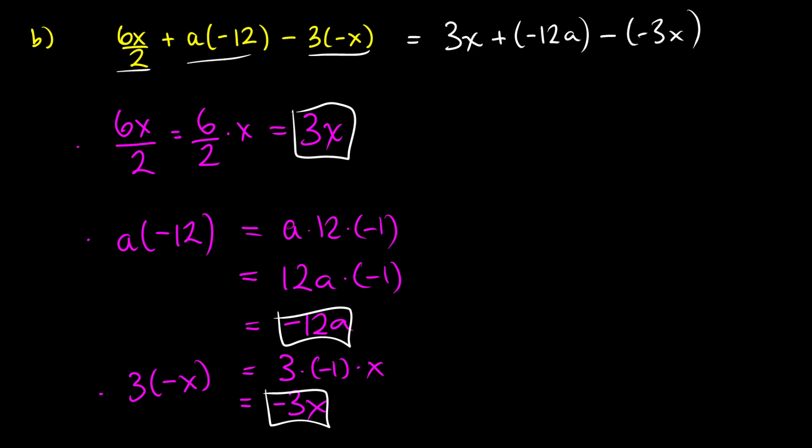But now that we've done that for each one, we can make this a little bit cleaner. So 3x is going to remain the same. But what does it mean when we add negative 12a? Well, that's the same thing as subtracting 12a. What if we subtract negative 3x?